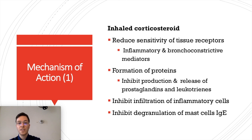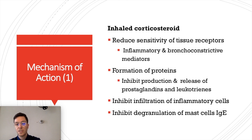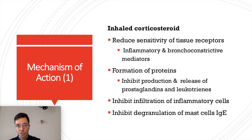How does it work? Fluticasone is an inhaled corticosteroid with several effects. First, it reduces sensitivity of tissue receptors for inflammatory mediators and bronchoconstrictive mediators. It also leads to the formation of proteins that inhibit the production and release of prostaglandins and leukotrienes. It also inhibits the infiltration of inflammatory cells in your lungs and inhibits degranulation of mast cells in your lungs, therefore decreasing the level of IgE.